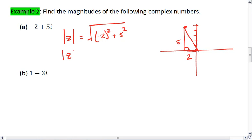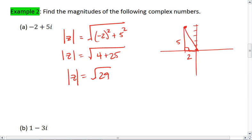The magnitude then is the square root of 4 plus 25, which is the square root of 29. And there's your magnitude for negative 2 plus 5i.